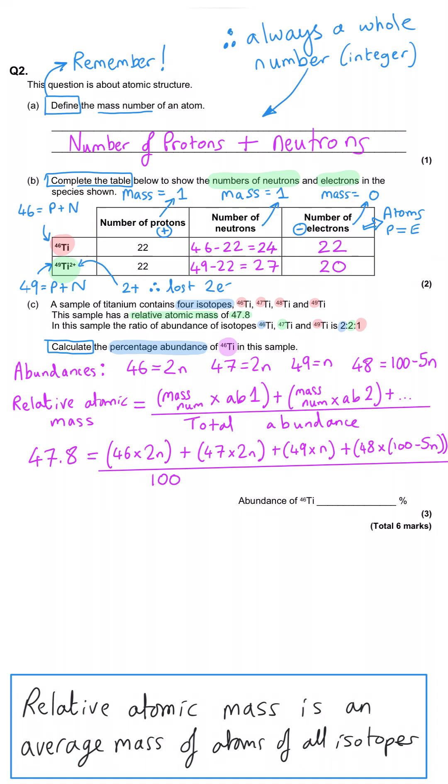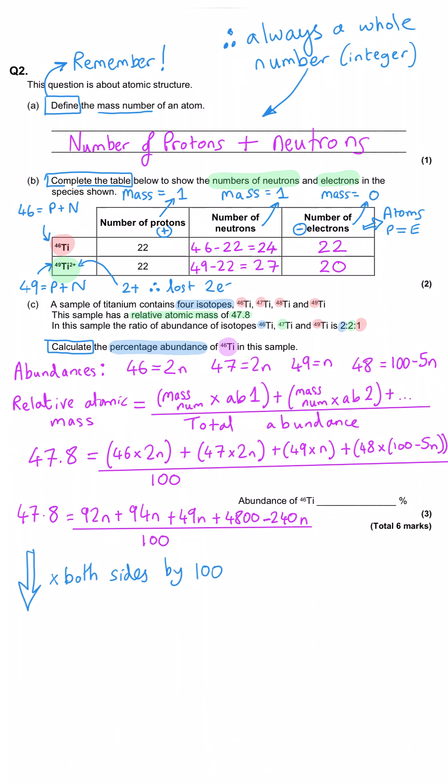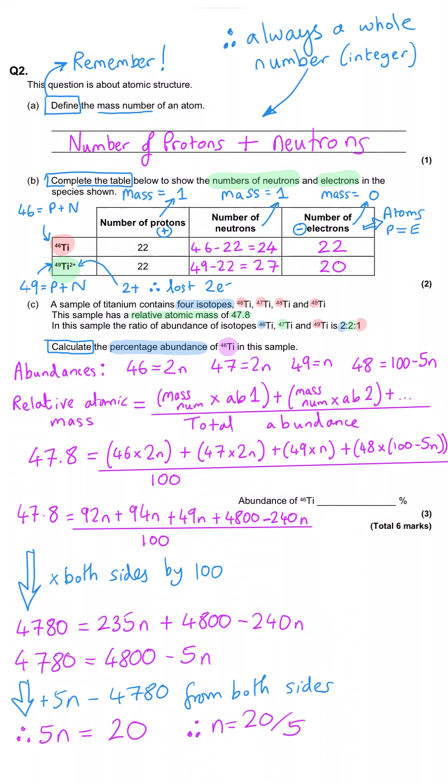If we calculate this in stages, we have 47.8 equals 92n plus 94n plus 49n plus 4800 minus 240n. And then this is all divided by 100. And then we rearrange that. So we have 47.8 multiplied by 100, so that is 4780, equals 235n plus 4800 minus 240n. And then 4780 equals 4800 minus 5n. So if we move the 5n over to the other side and then subtract 4780 from both sides, we are left with 5n being equal to 20, and so n equals 4.